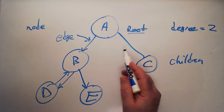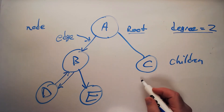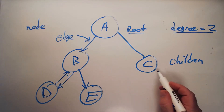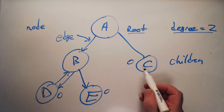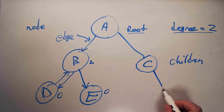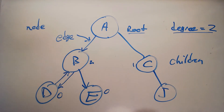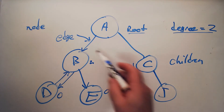Just like the tree as a whole has a degree, each individual node can also have a degree. The degree of C is zero, the degree of E is zero, D is zero — so all the leaves have a degree of zero. B has a degree of two. If I add a node J here, now C has a degree of one. When you define the degree of a tree, you're always talking about the maximum degree possible in any given node.